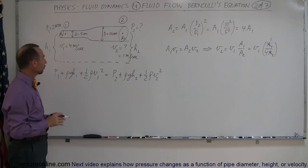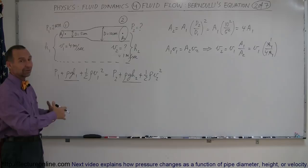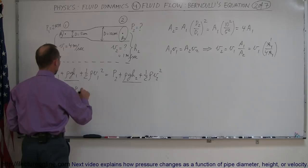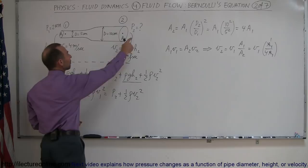First of all, the height doesn't change, which means that the term rho GH1 and the term rho GH2 has to be exactly the same. They stay constant. So I can go ahead and just simply remove it from both sides of the equation, which now means the equation then simplifies to P1 plus 1 half rho V1 squared equals P2 plus 1 half rho V2 squared.